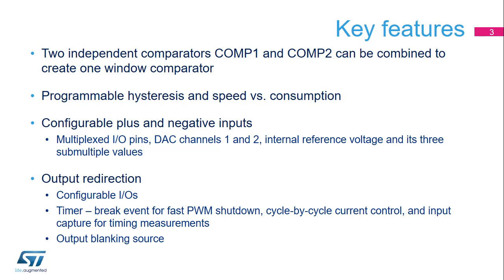The two integrated comparators can be combined into a single window comparator. The analog properties of the comparator include hysteresis or a trade-off between speed and power consumption, which are configurable. It offers flexible interconnections of inputs and outputs, allowing a threshold selection of several external and internal inputs such as DAC outputs or internal reference voltage outputs.